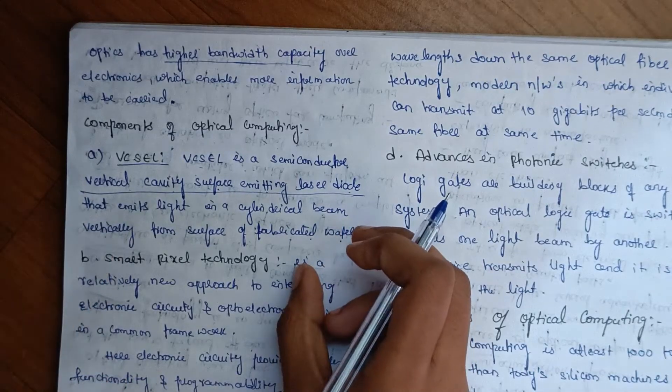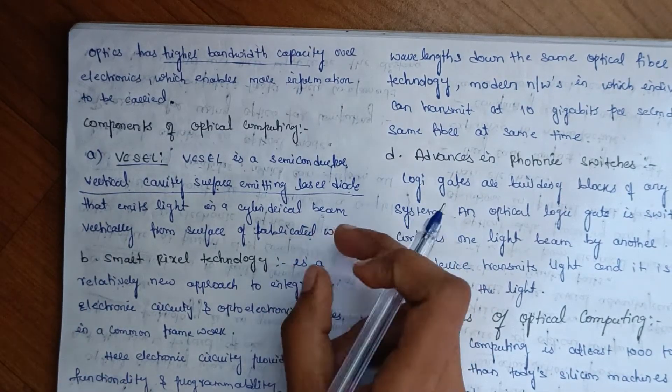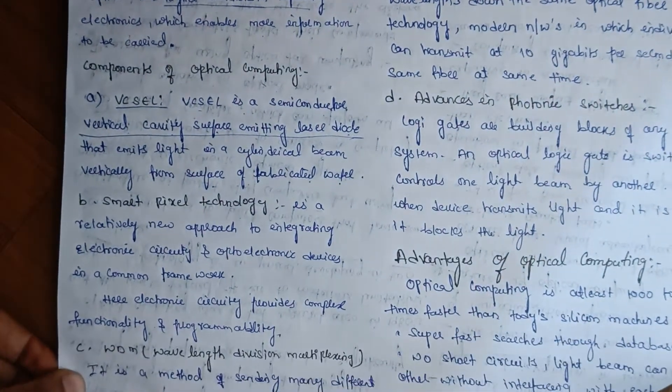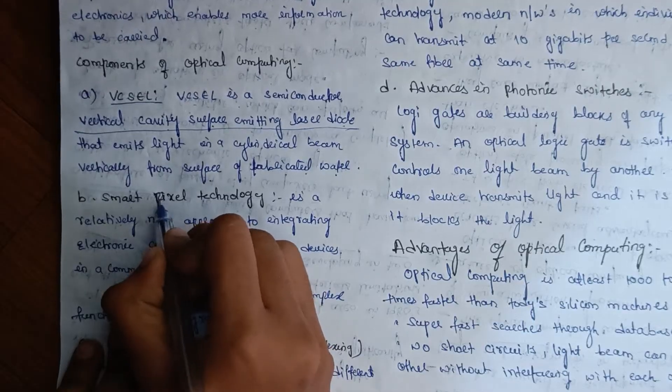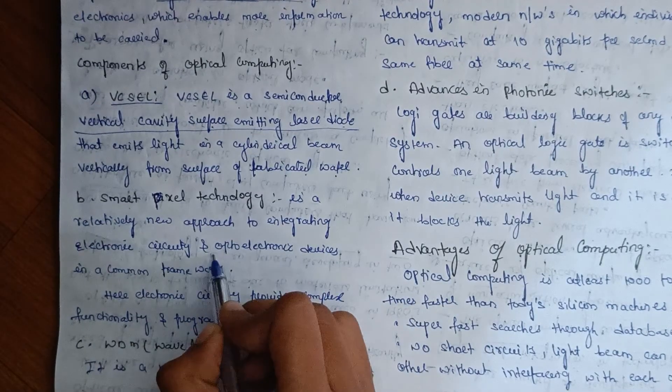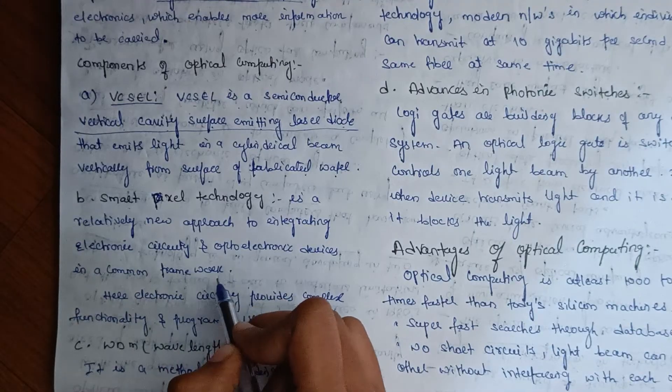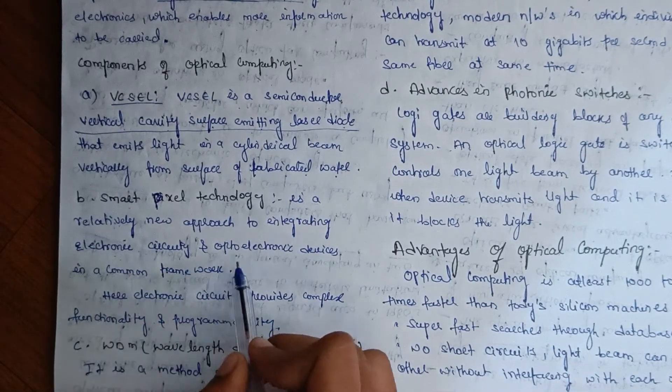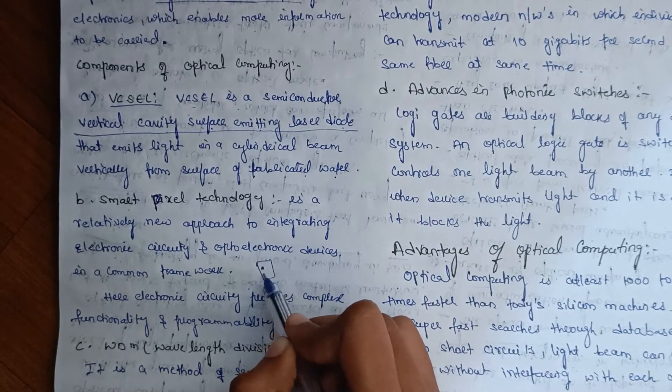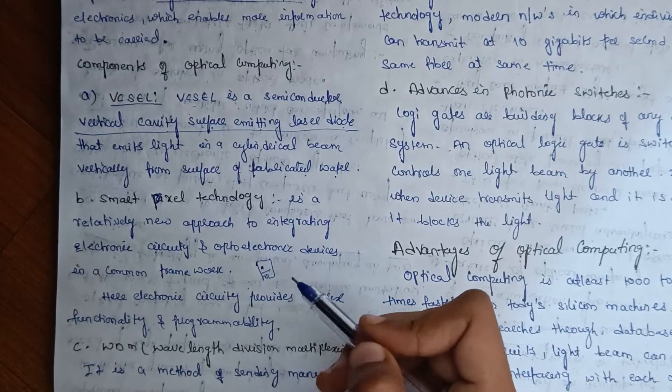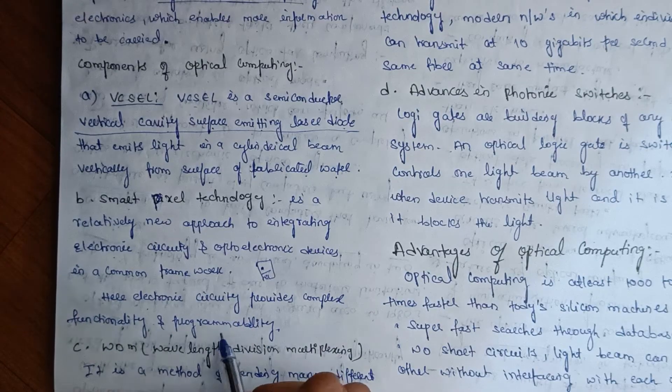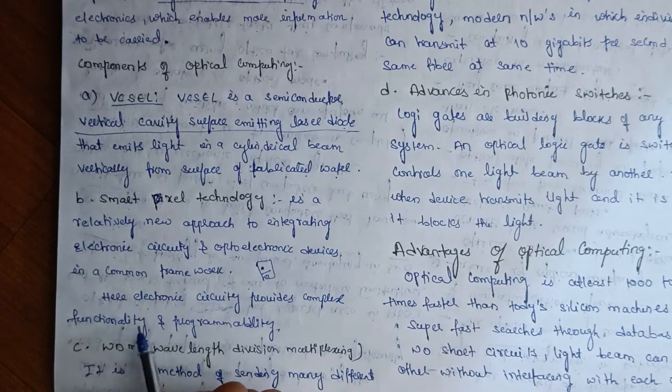VCSEL - Vertical Cavity Surface Emitting Laser. It will emit light as a cylindrical beam vertical from the surface. Next is smart pixel technology - a relatively new approach to integrate electronic circuits and optoelectronic devices in a common framework. Electronic circuit provides complex functionality and programmability.